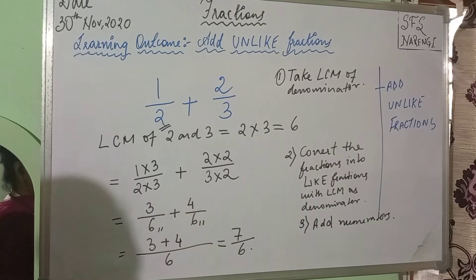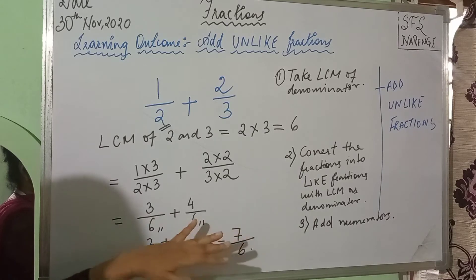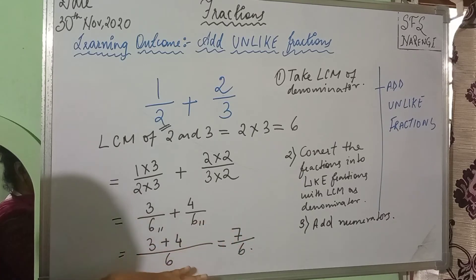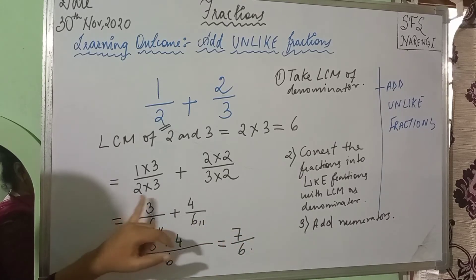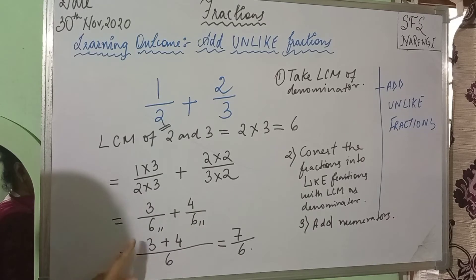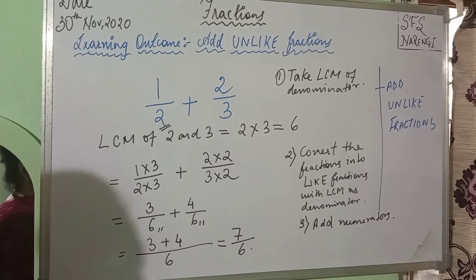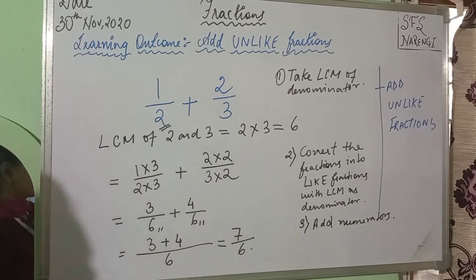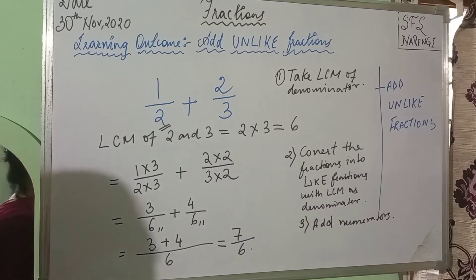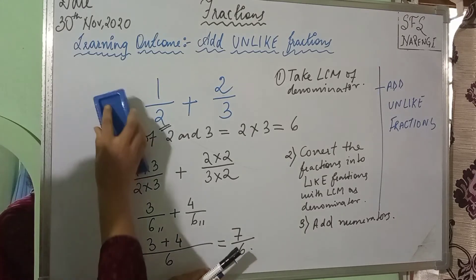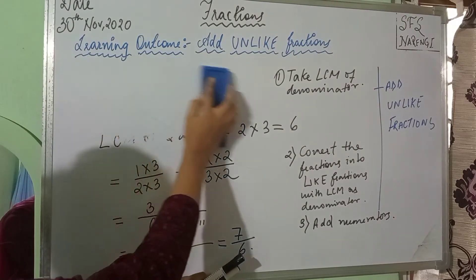After that, group the fractions with the same denominator and add the numerators to get the result. So, once you add the numerators, you will get the result. This was 1 by 2 plus 2 by 3.